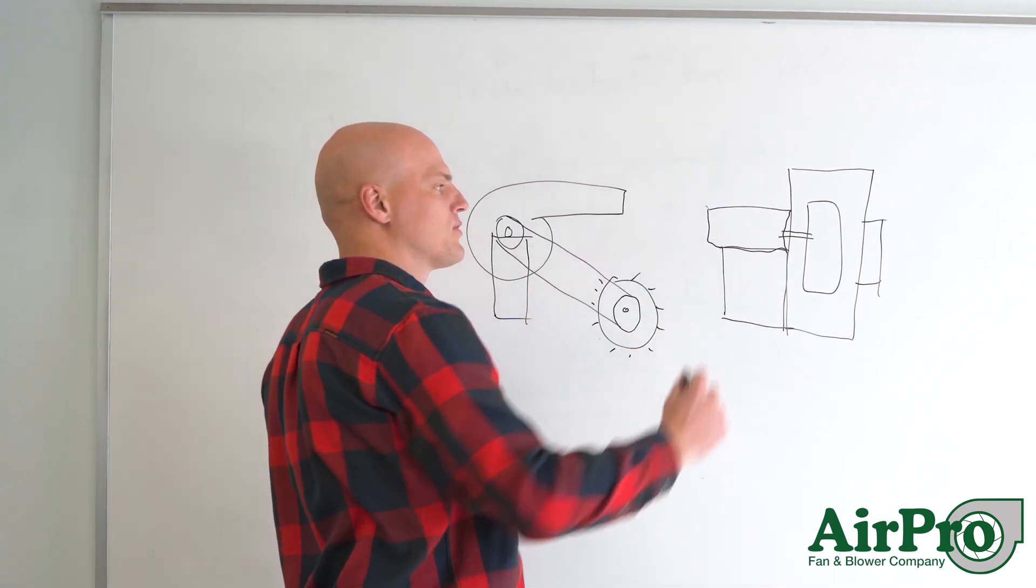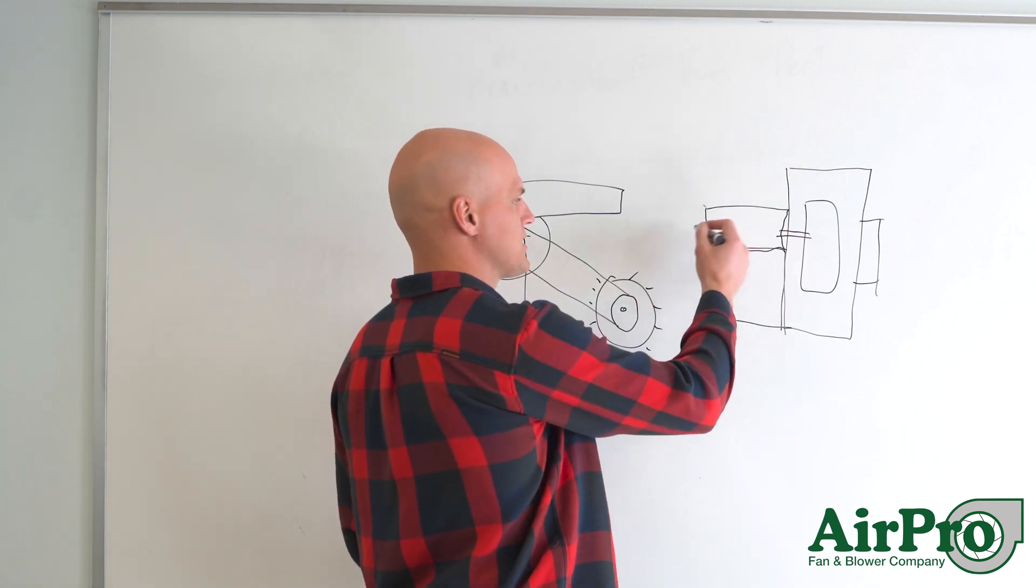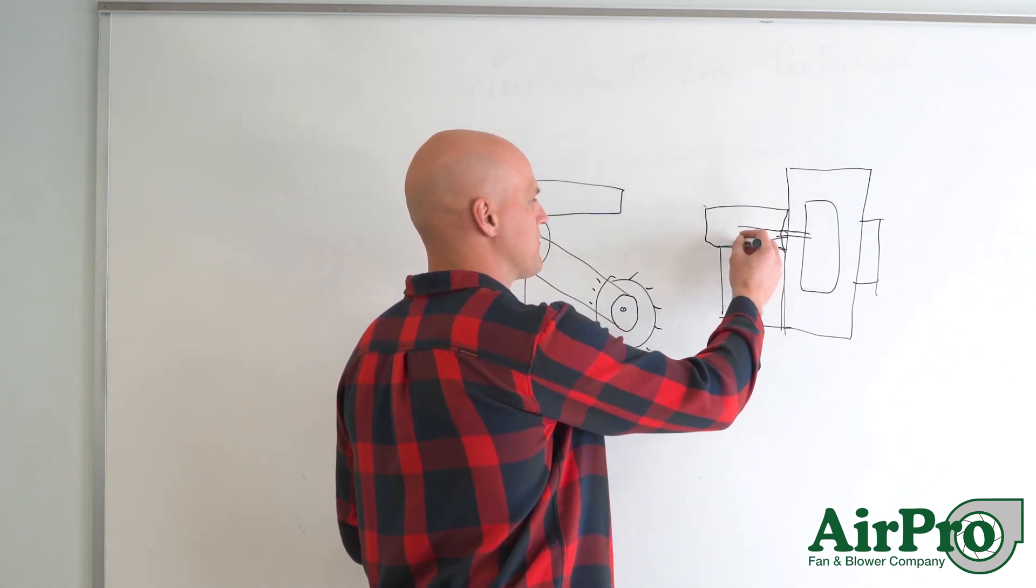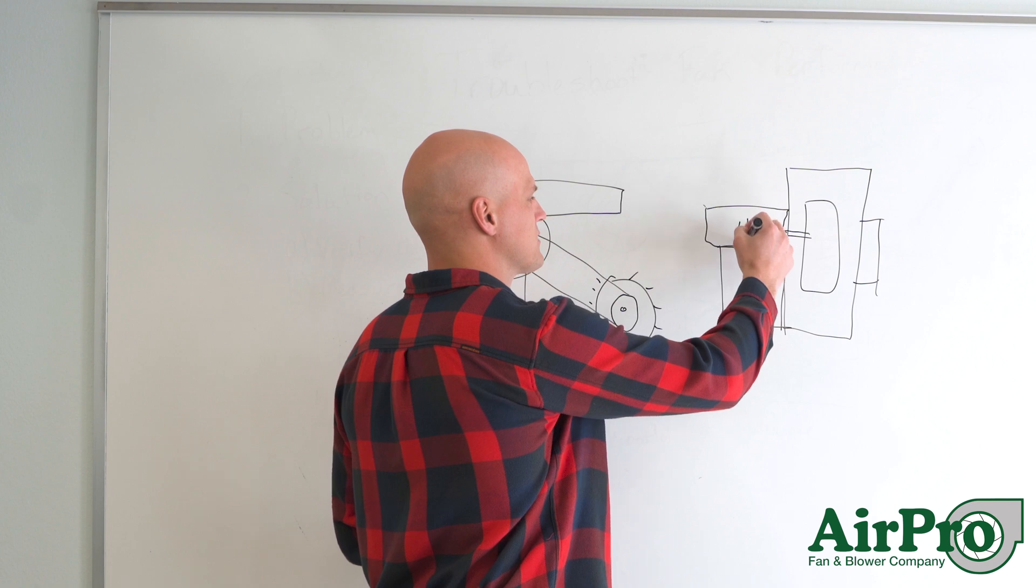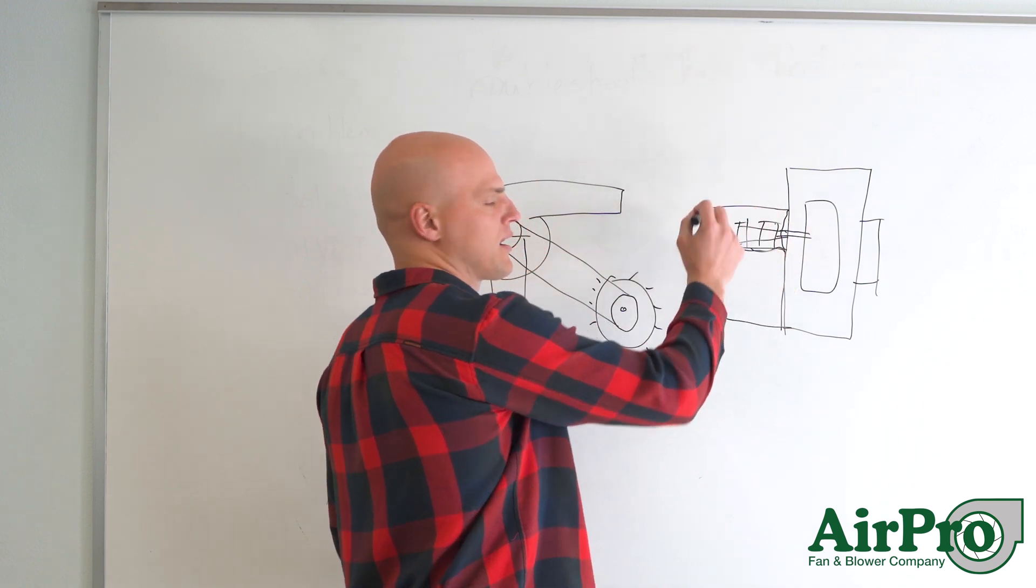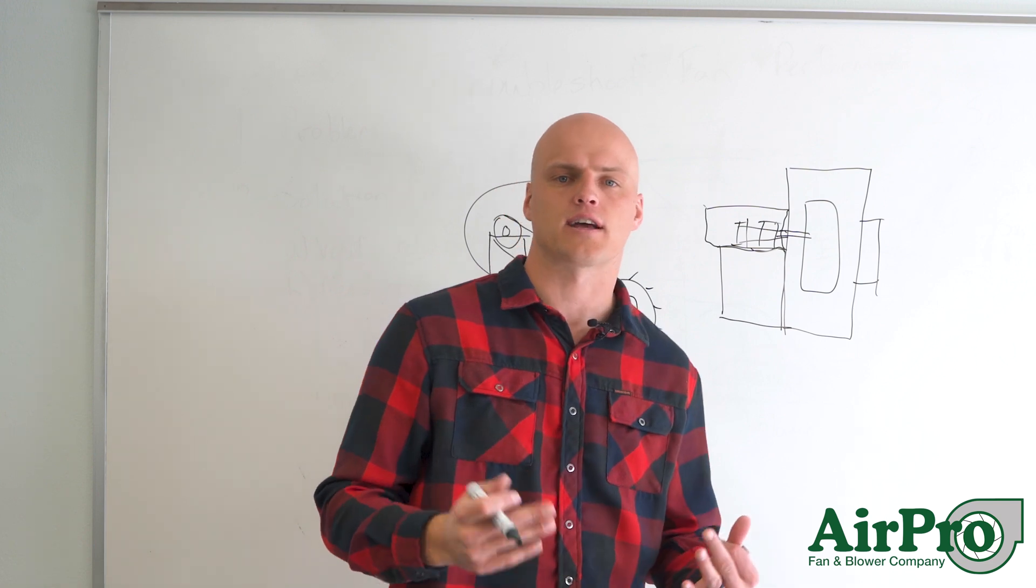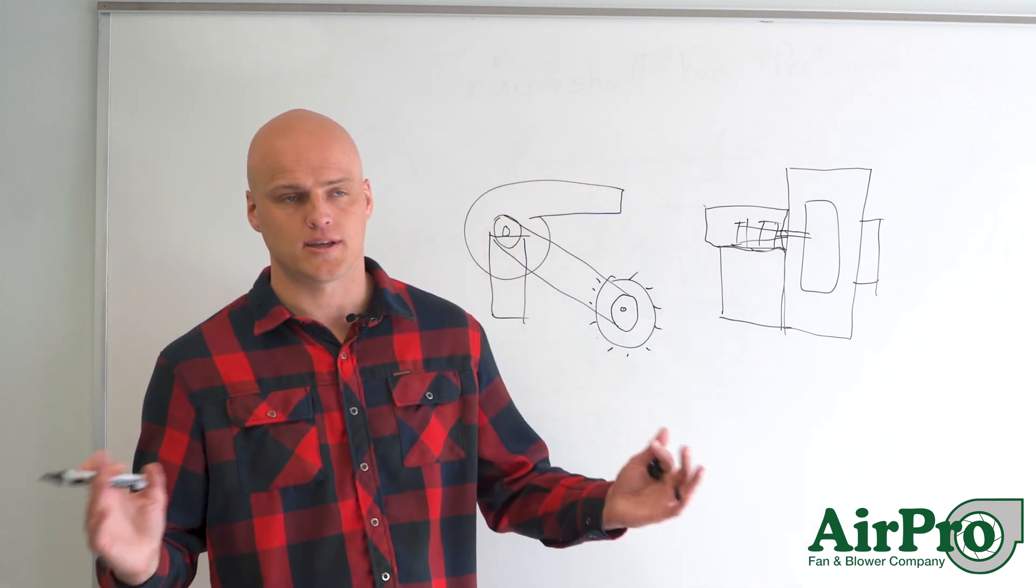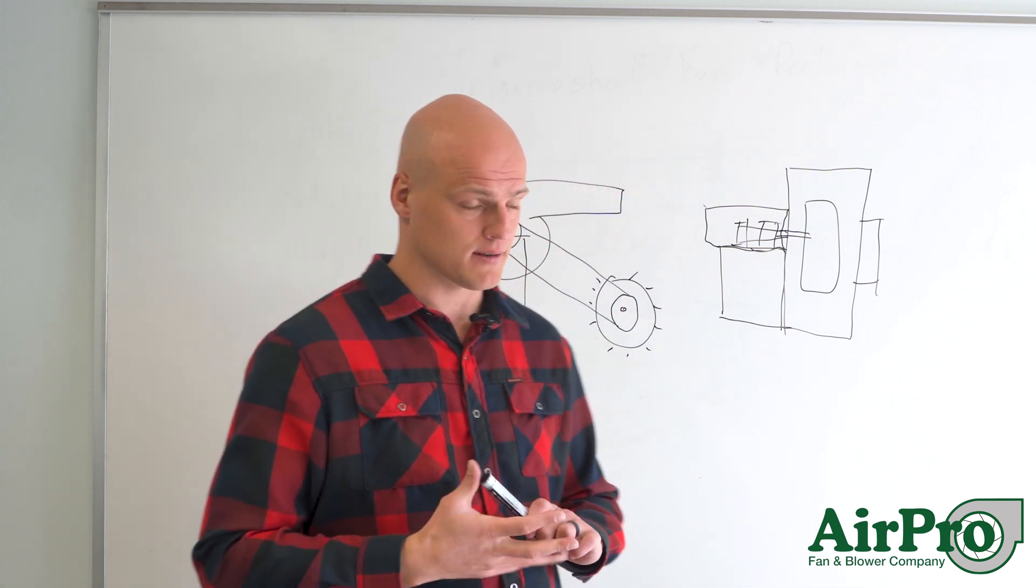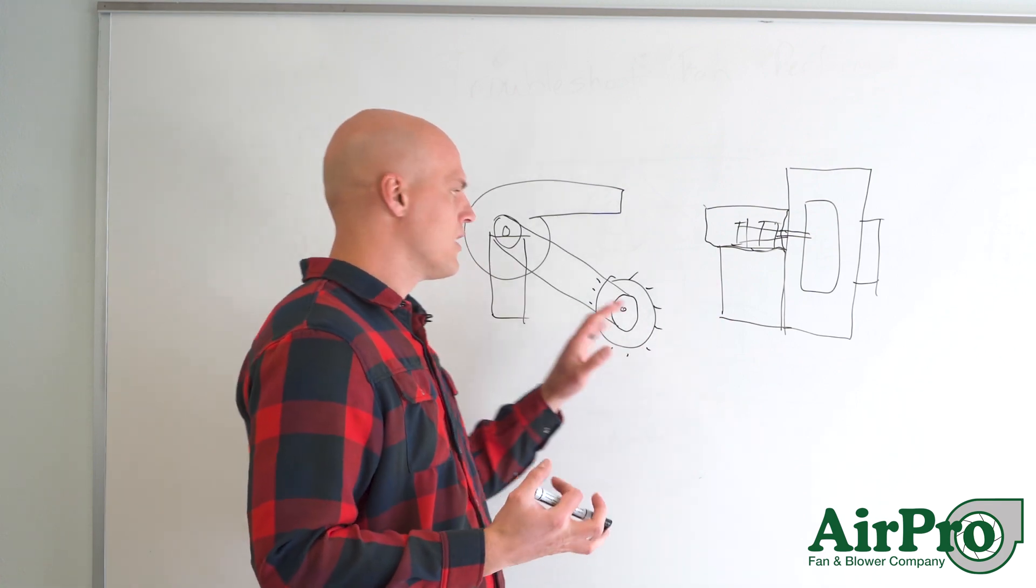Another type of direct drive fan, arrangement eight, you'd have the motor just slid back here, the shaft would go a little bit further, you'd have two bearings like this, and you'd direct couple it. A lot of times you'd do that instead of an arrangement four for reasons like higher horsepower, or maybe you have temperature in the fan that can't reach the motor bearings.